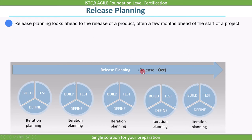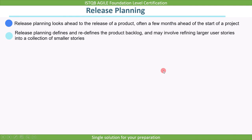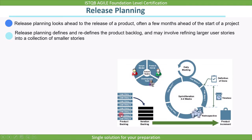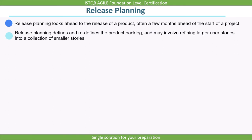For example, suppose you are making a plan in the month of July to release the product in October — that means you are planning for the next three months. The second point is that release planning defines and redefines the product backlog and may involve refining larger user stories into a collection of smaller stories. During release planning, we analyze user stories, and if a user story can be divided further, we divide it into smaller stories so that we can plan them easily. The product backlog is defined during release planning.